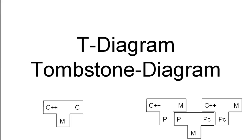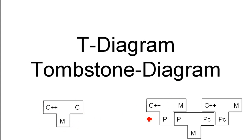Hello! In this video I want to talk about the T-diagram or the tombstone diagram, which is this thing that you see down here, which basically just represents a compiler that takes C++ code, puts out C code, and is written in machine code. I will also explain how to actually read this thing and give some more examples later on.